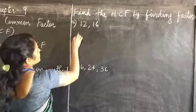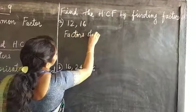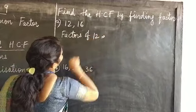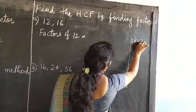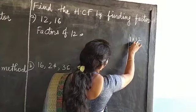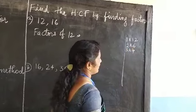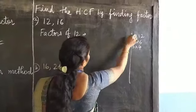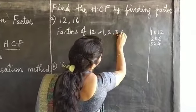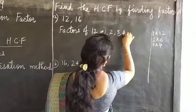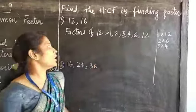Now, factors of 12. Which are the factors of 12? You can see here: 1 × 12 = 12, 2 × 6 = 12, 3 × 4 = 12. So the factors of 12 are 1, 2, 3, 4, 6 and 12. These are the factors of 12.